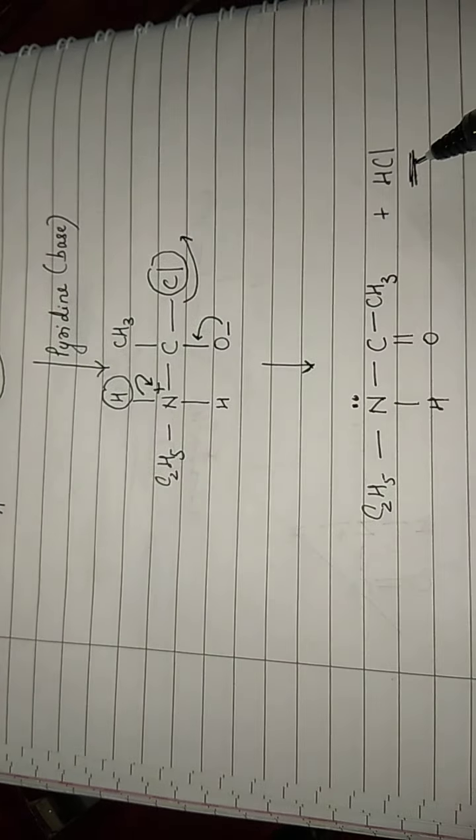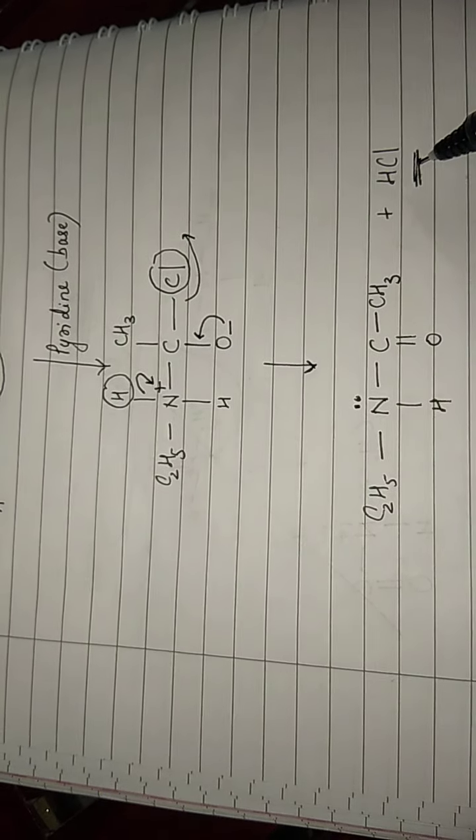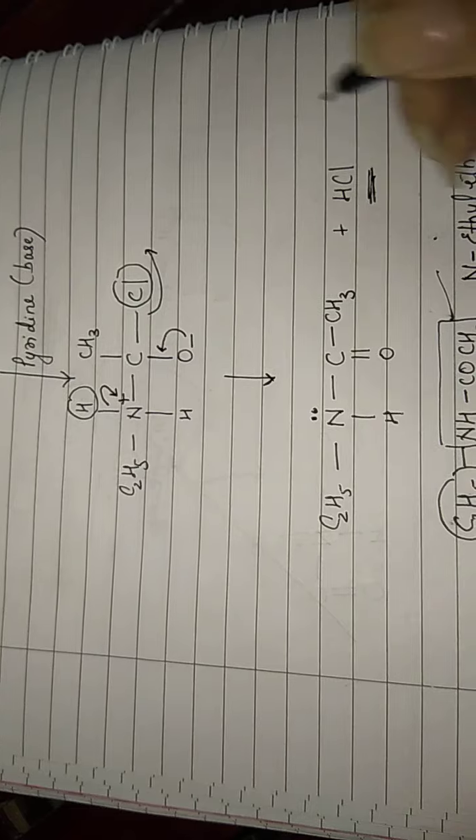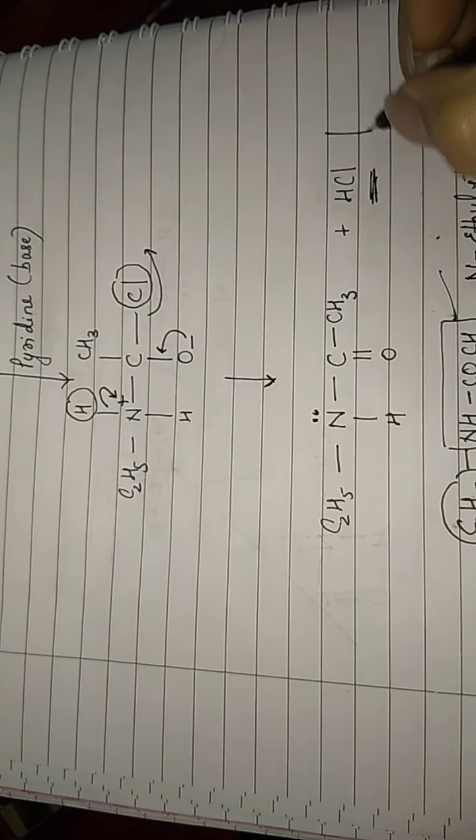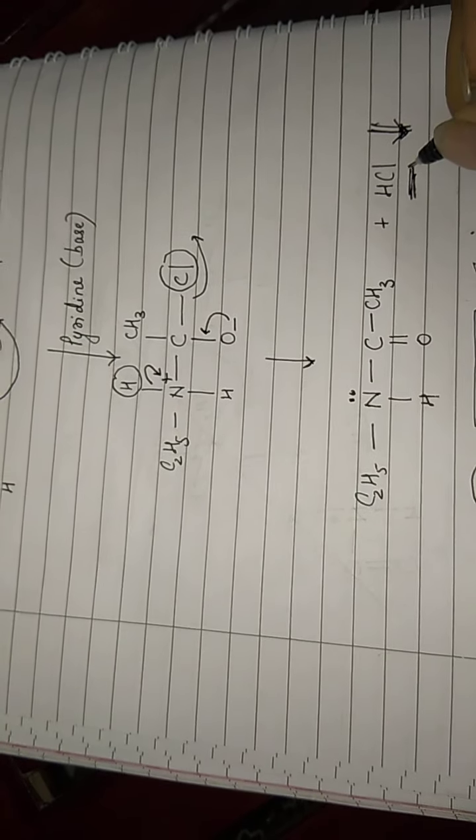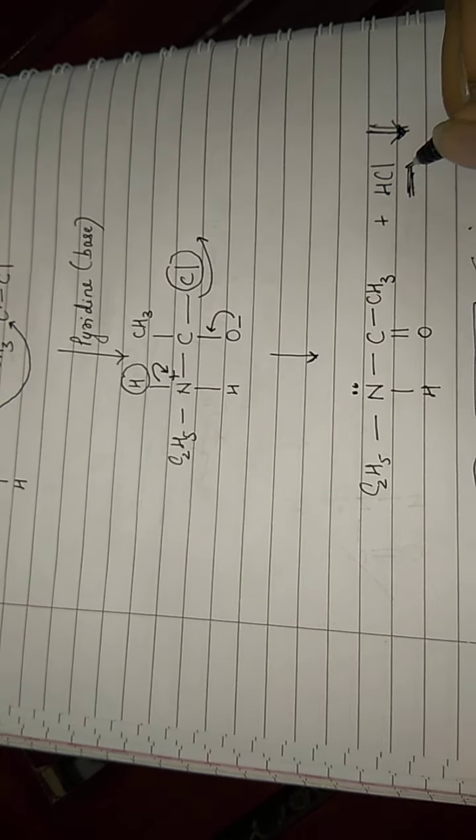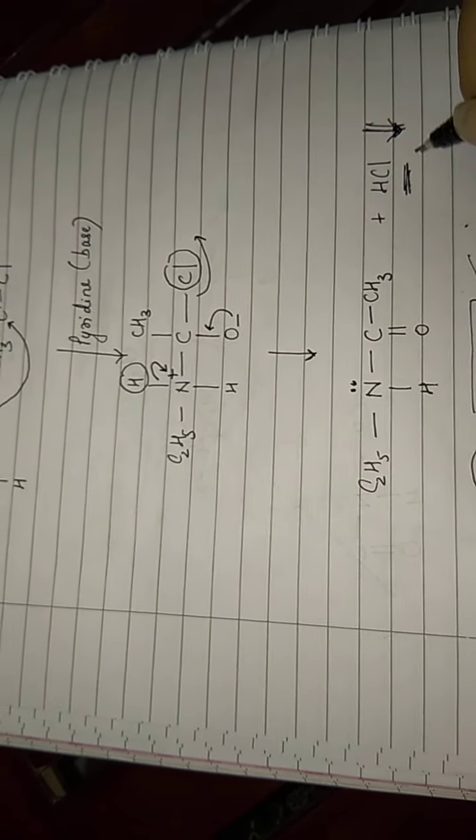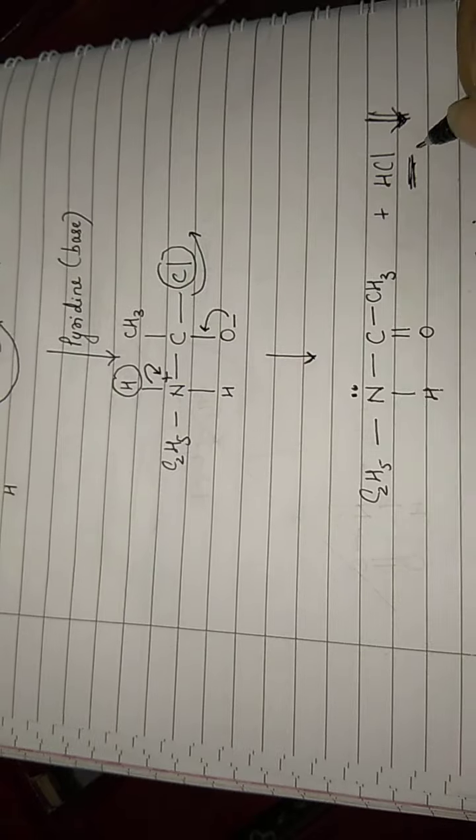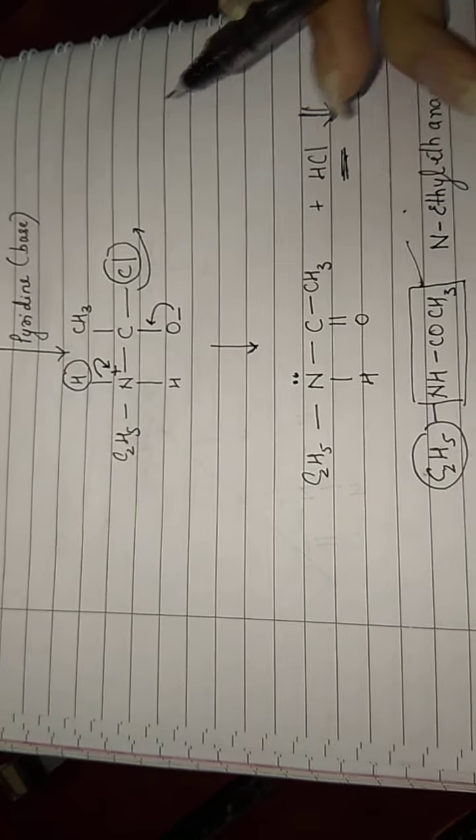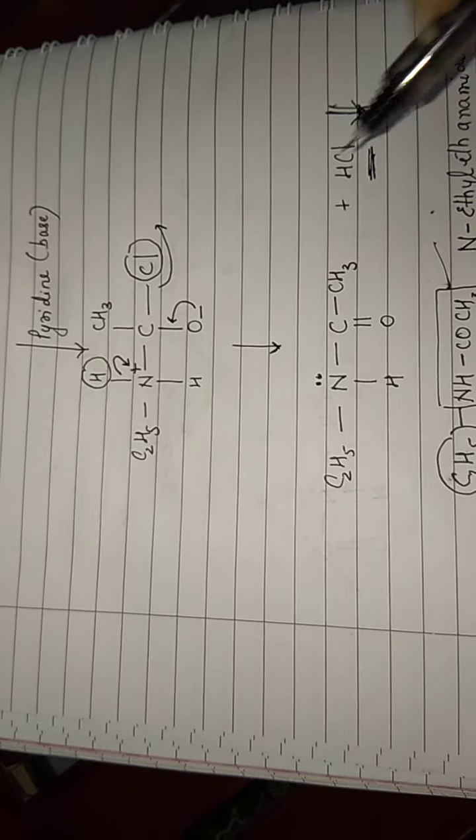An acid is being generated in the reaction, and this base has been added to neutralize this acid. As soon as HCl is formed, the base immediately neutralizes it. When the concentration of HCl decreases, as per Le Chatelier's principle, the reaction will move in the forward direction to nullify the effect of this change. So to keep the reaction moving forward, we add the base pyridine.